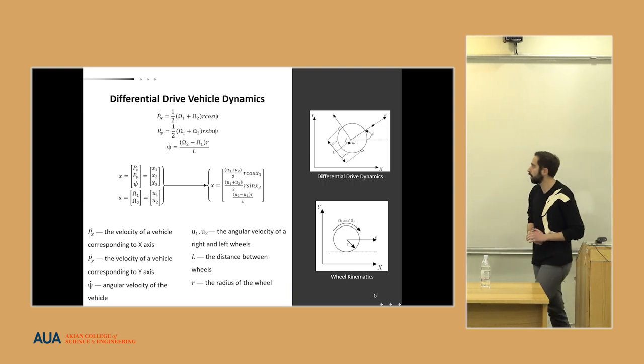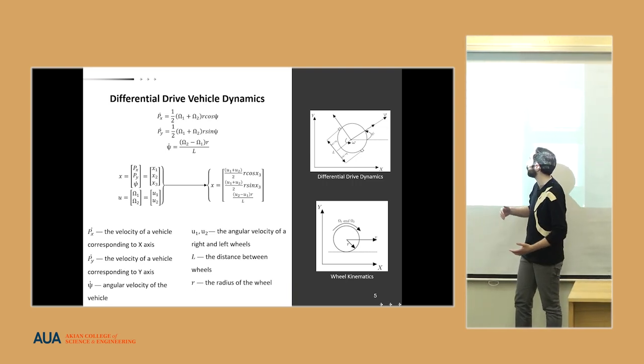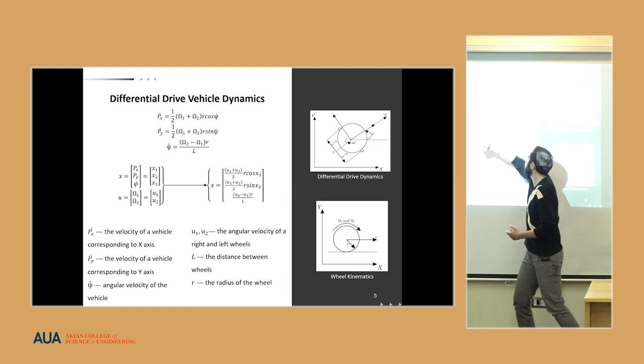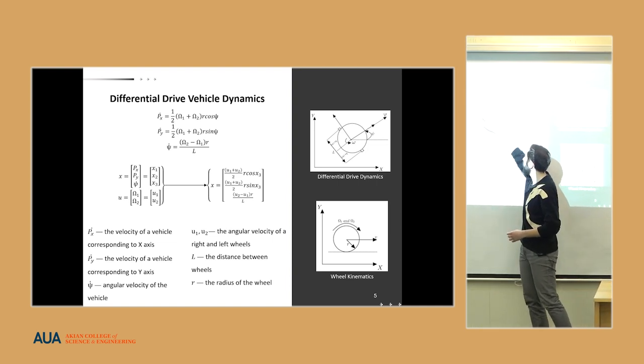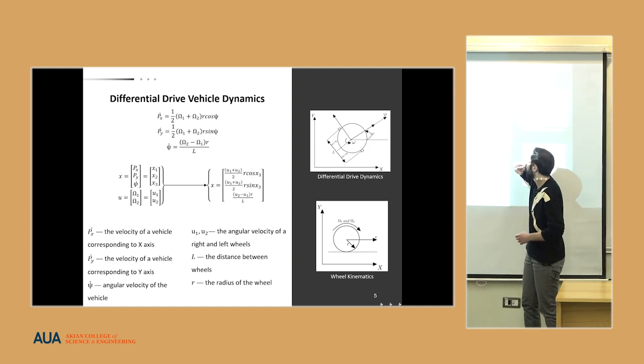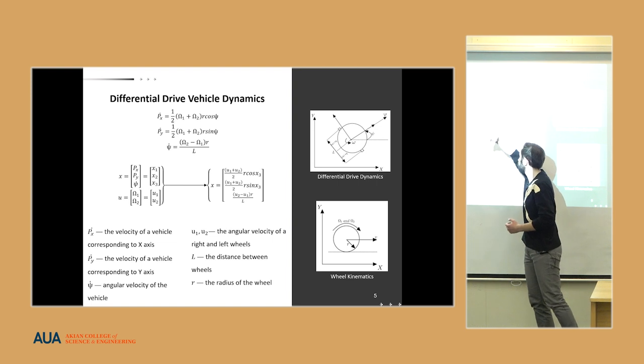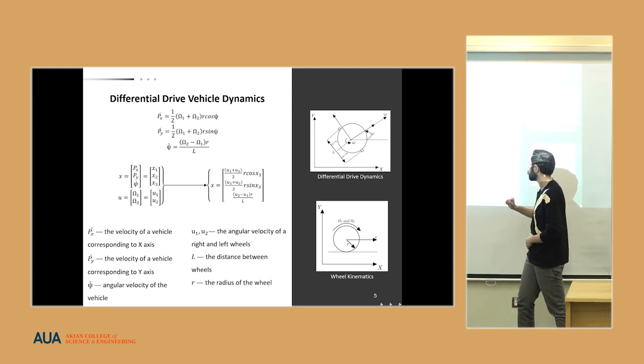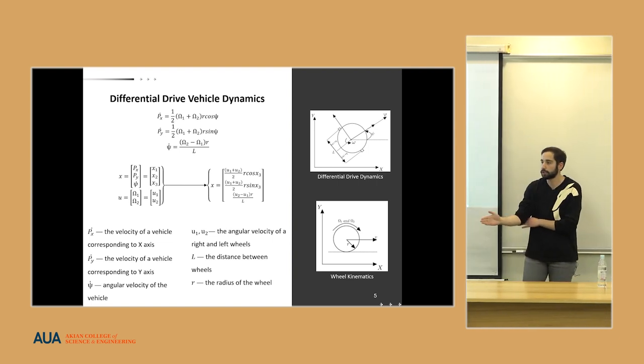Talking about the dynamics of this system, for finding the velocity of the vehicle according to the x-axis and y-axis, we need the angular velocities of the left wheel and right wheel, and also the radius of the wheel. We also need the length distance between the wheels for finding the angular velocity of the vehicle to show how it changes its direction.